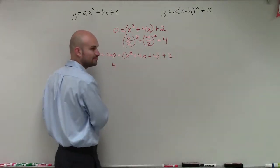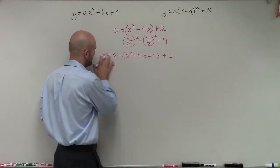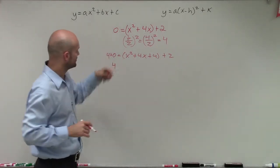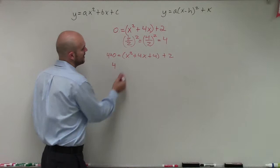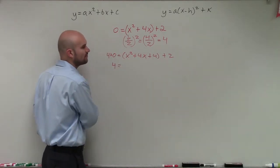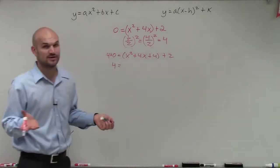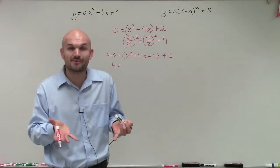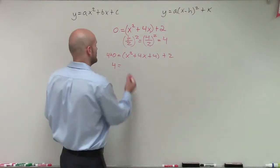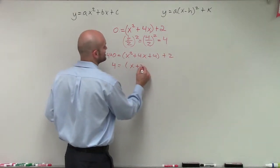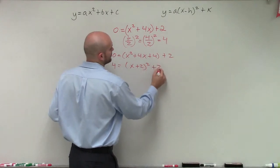And then I still have that positive 2. Well, this just becomes 4, right, plus 4 plus 0. That becomes 4. We don't really need to write the 4. I could wrote that below. And then this, x squared plus 4x plus 4, since that's a perfect square trinomial, the reason why we talked about perfect square trinomials is because they're very simple to factor. We can break this down into x plus 2 squared plus 2.